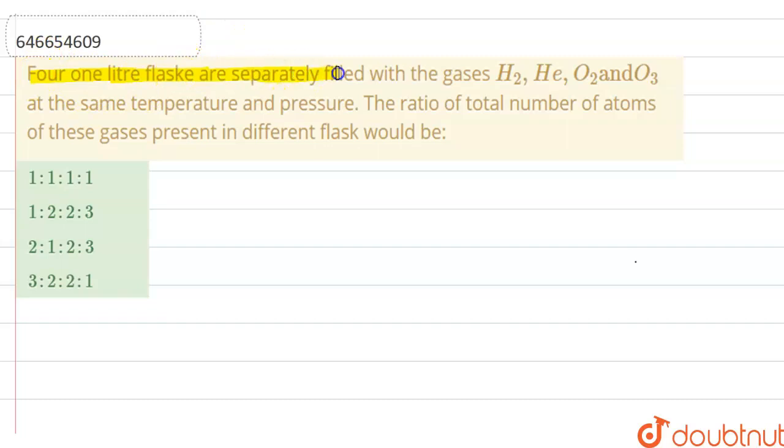Four one liter flasks are separately filled with gases H₂, helium, O₂, and O₃ at the same temperature and pressure. The ratio of total number of atoms of these gases present in different flasks would be? So volume, temperature, and pressure are constant.